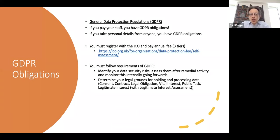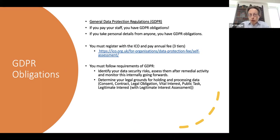Contract is where you can agree to hold someone's data according to the contract you have with them, which prevents you having to keep asking them. Legal obligation, vital interest, and public task all relate to different aspects of data that is held, manipulated, or transferred on the basis of a larger public good — things to do with the police, the school system, the health service, and so forth.